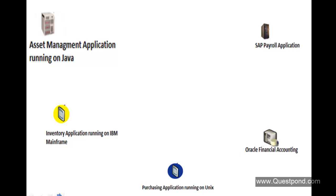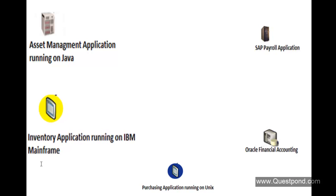Definitely, over a period of time, these machines will fail or they will wear and tear and will need a replacement. So this particular application manages the asset data like the description of those machines, their working conditions, etc. Another application that this organization uses is the Inventory application which is running on IBM mainframes. This application manages the stocks of the items or the assets in the storerooms or the go-down.